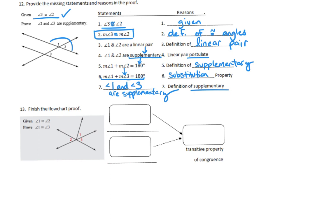Last question: finish the flow chart proof. In a flow chart proof, statements go in the boxes and reasons go on the lines. The first statement is what's given: angle 1 is congruent to angle 2 — reason: given. Next, we need to recognize that angle 2 is congruent to angle 3.